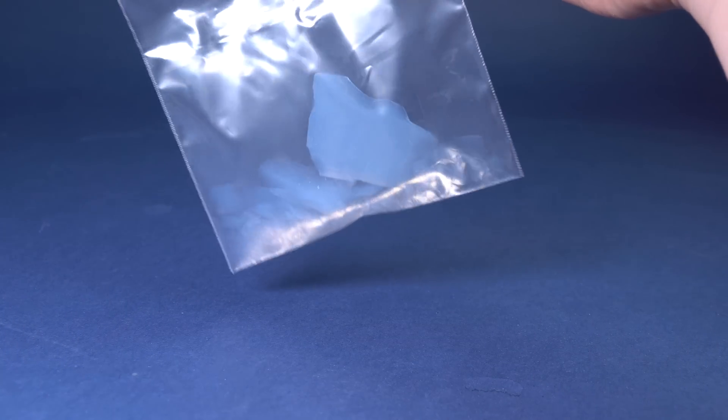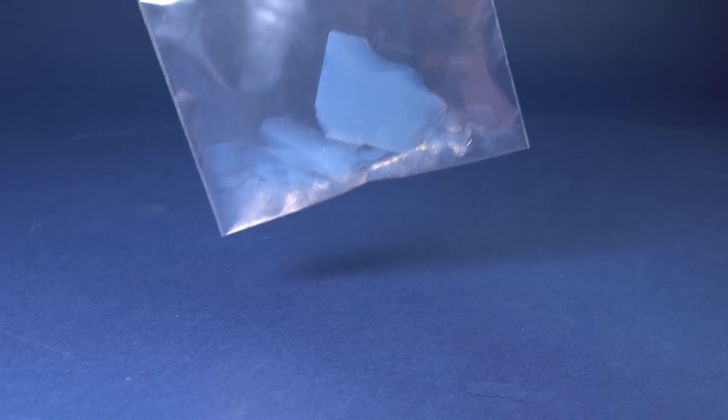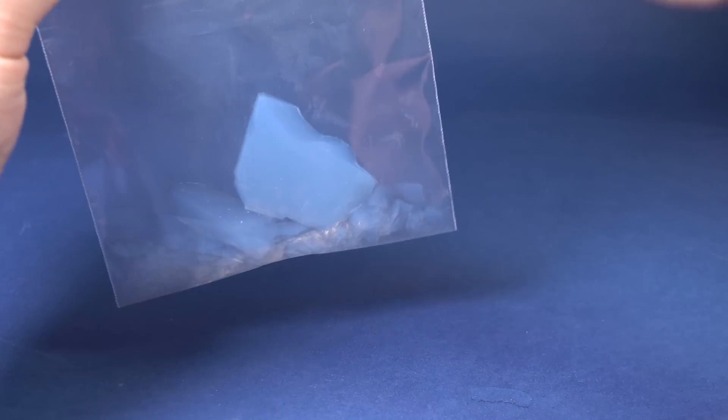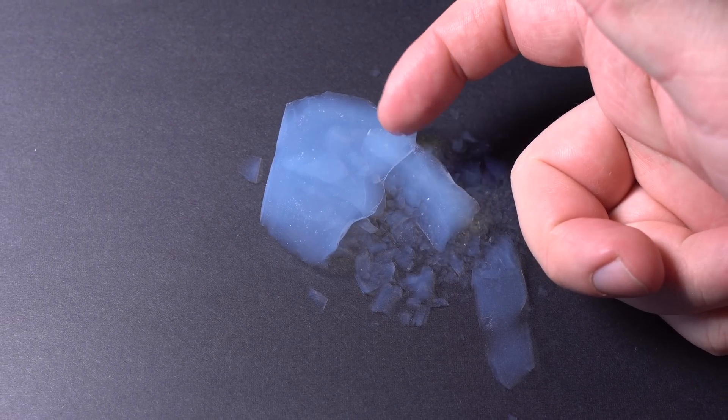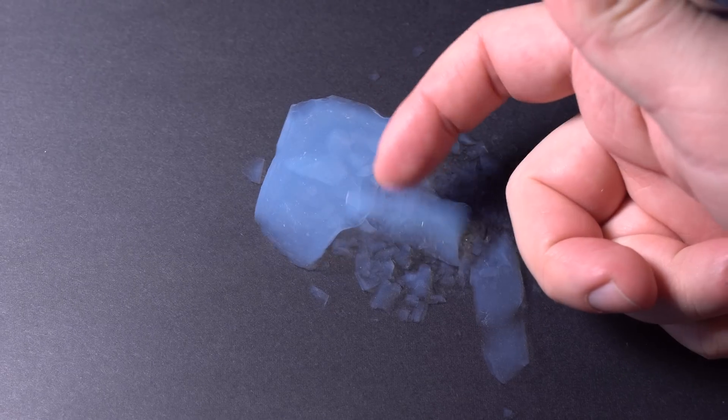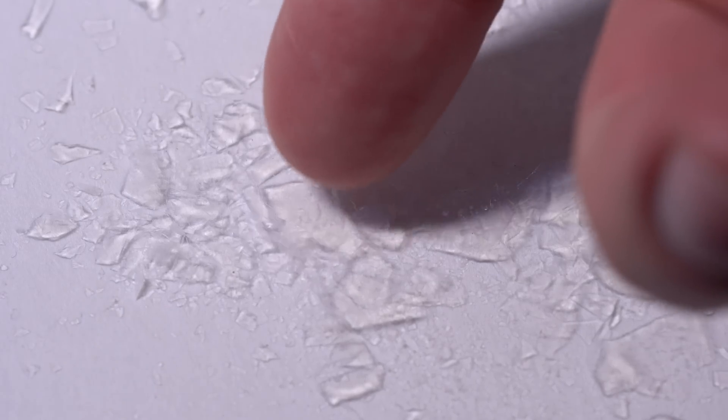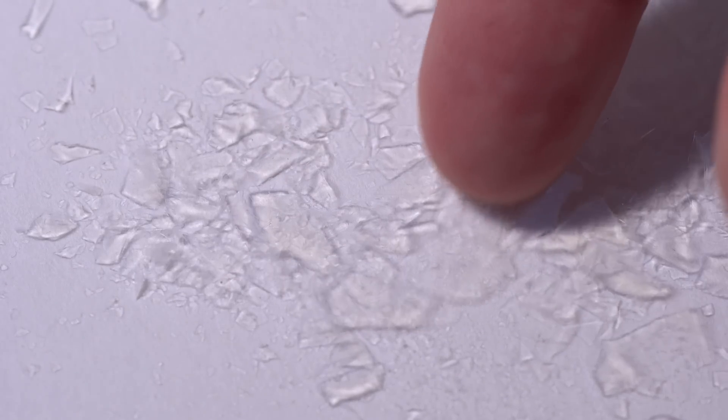As you can see, this material is very fragile and it crumbled when it was transported in the package. When aerogel crumbles are put on paper sheet, it looks translucent and very light and it is almost invisible against a light background.